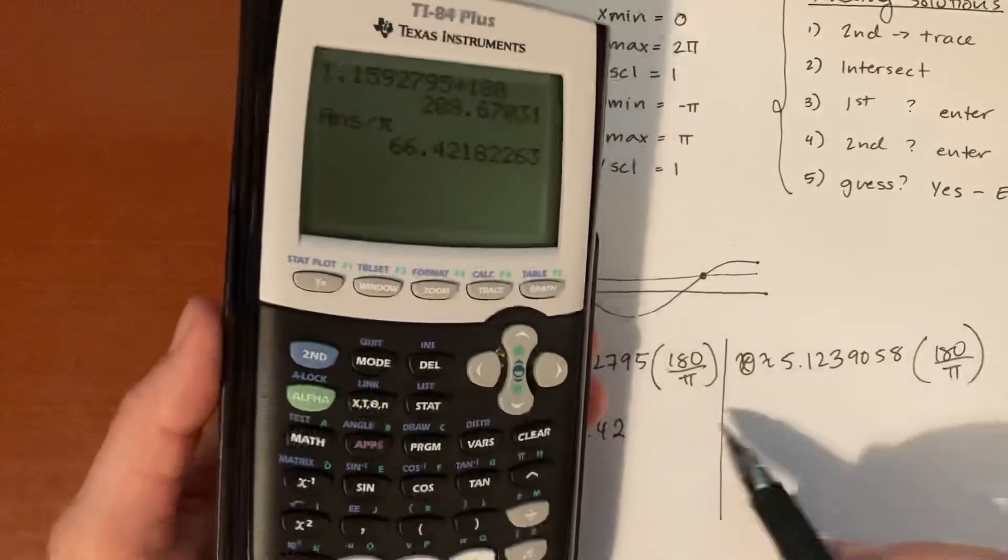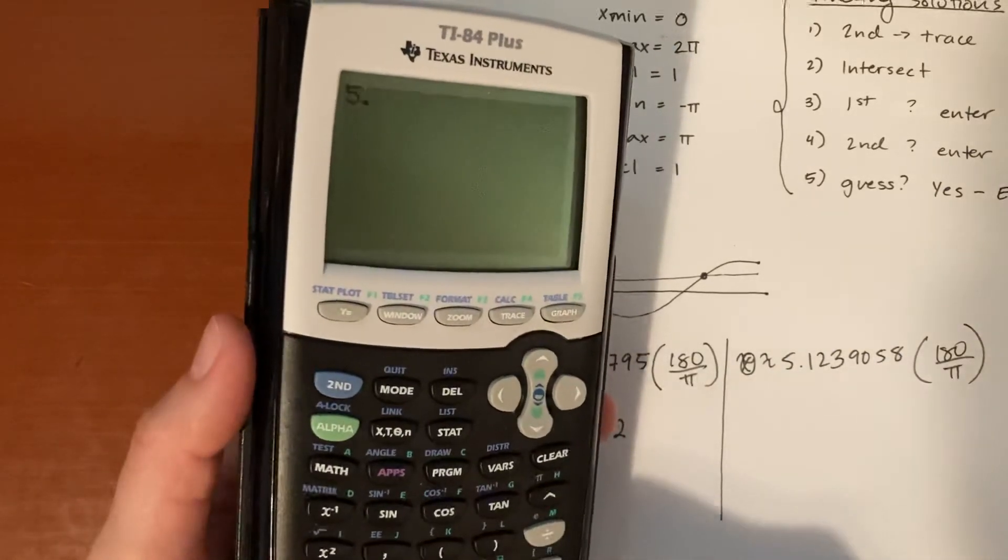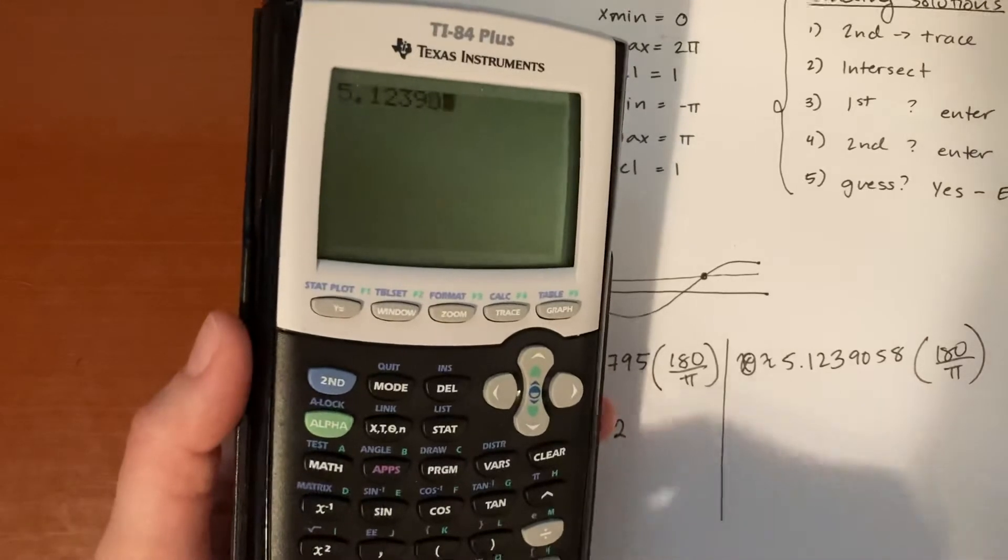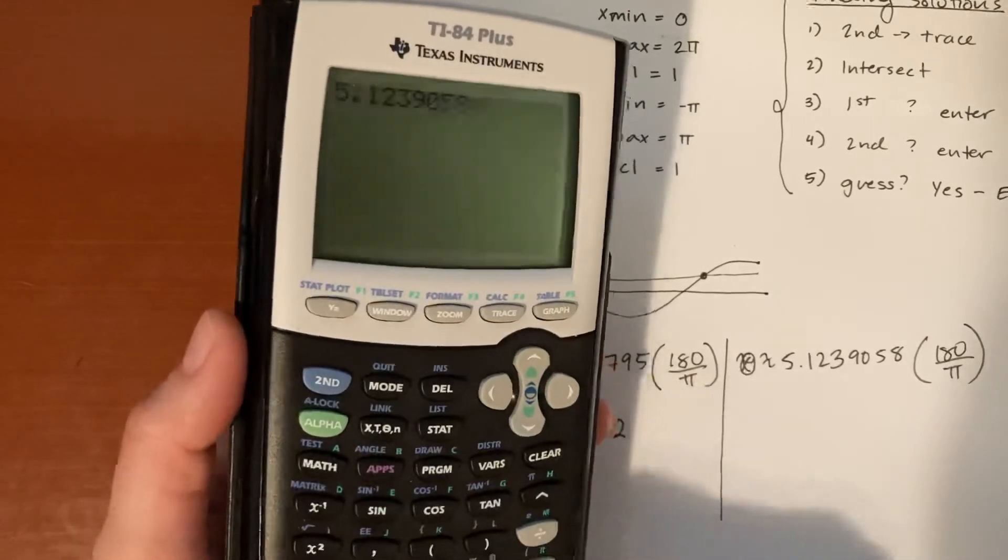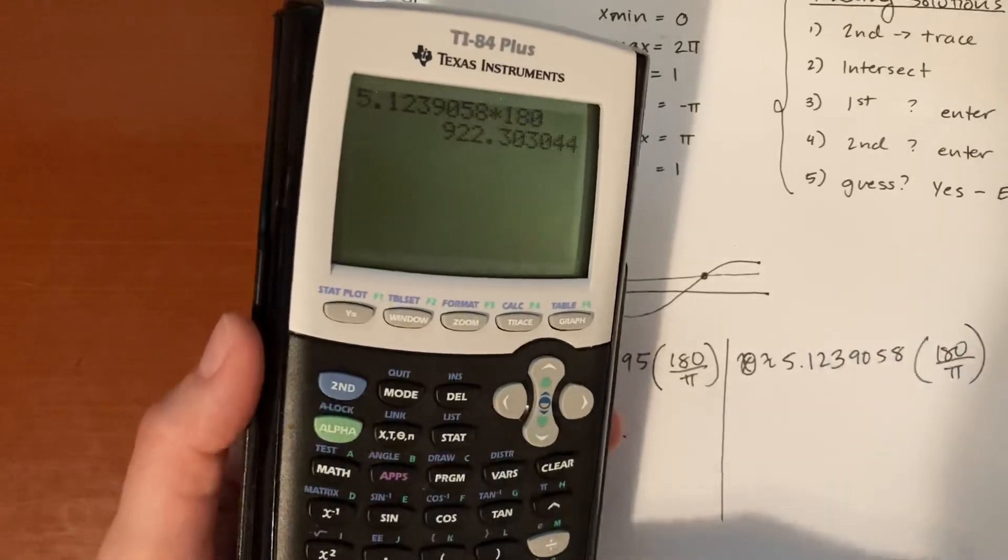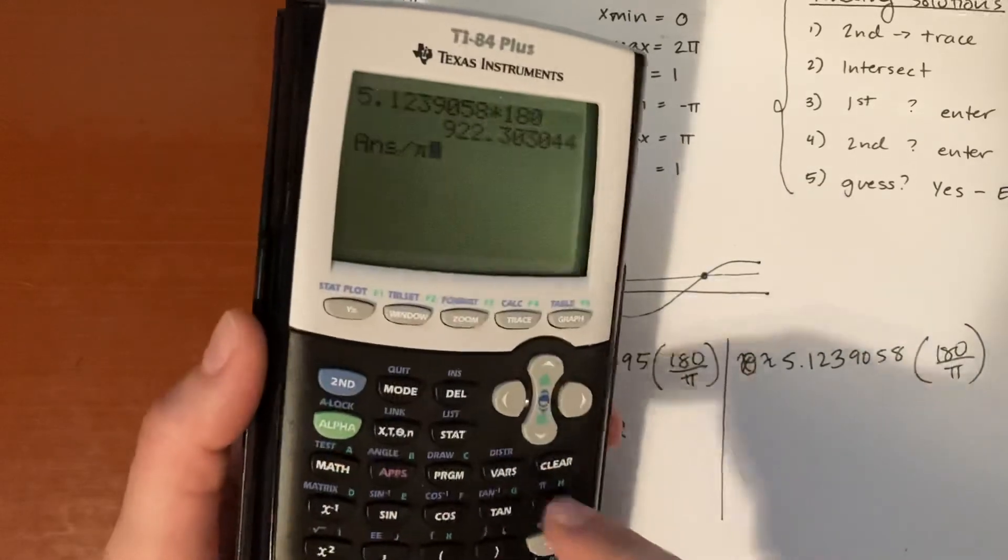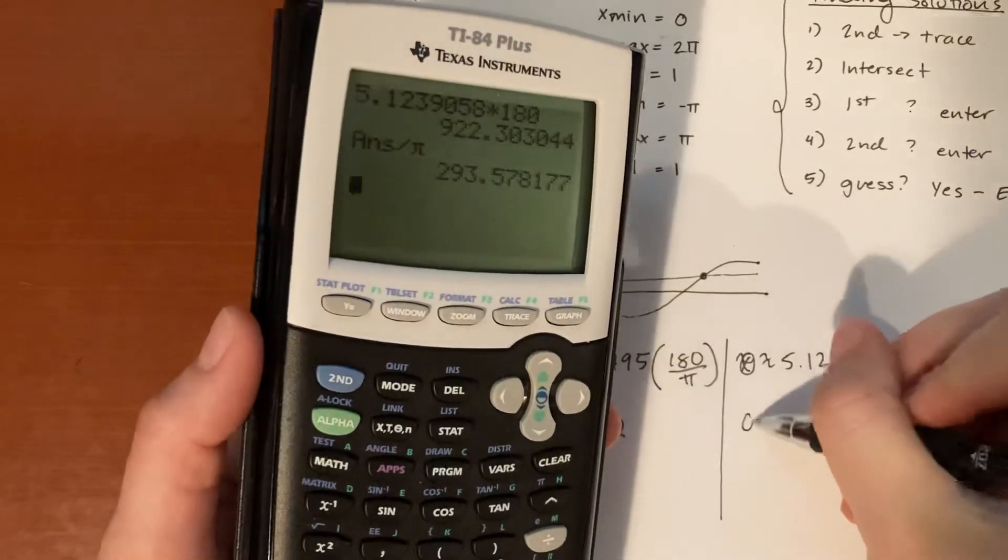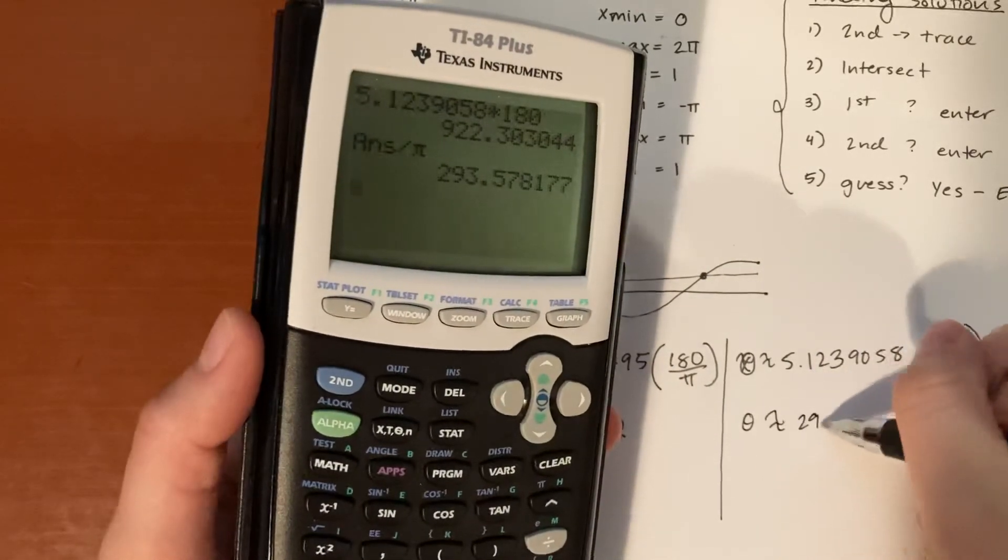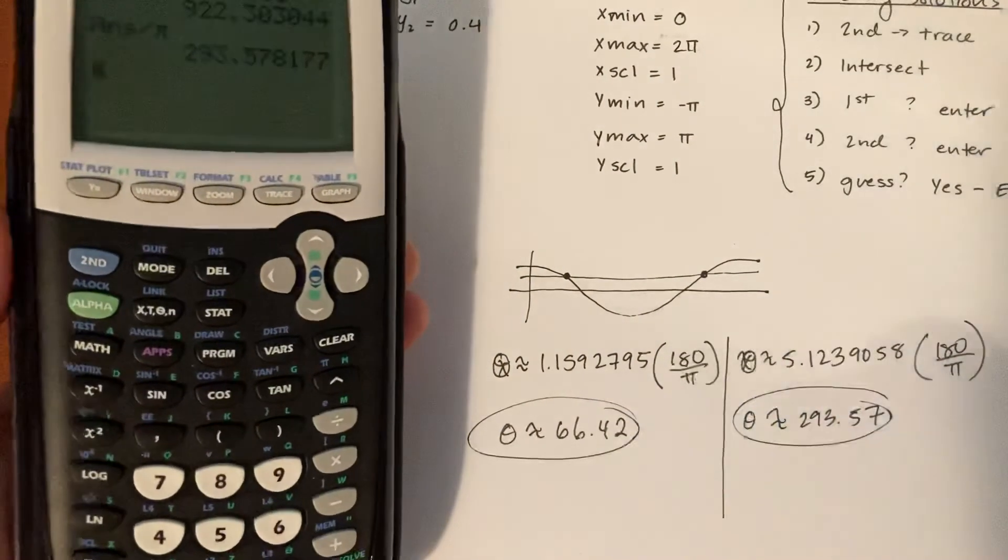Let's go ahead and do the conversion for this one. Hit clear. We have 5.1239058, times that by the 180, once again we're doing this to convert from radians to degrees, then go ahead, divide that by pi. And we get the other theta I had in the video, 293.57 roughly, and there are our two answers.